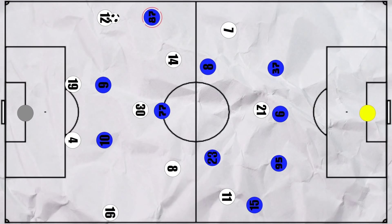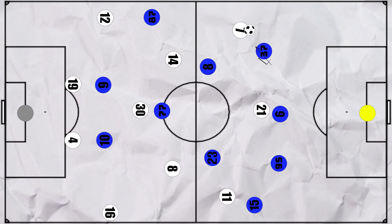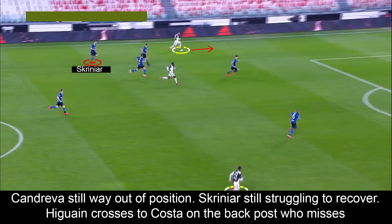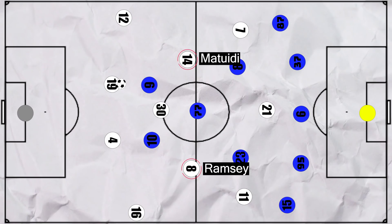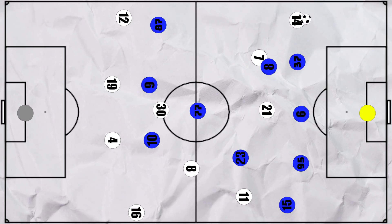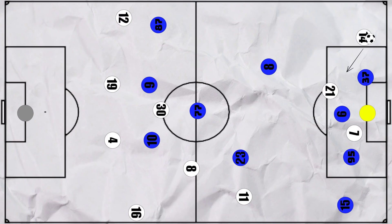Because Juventus' front three started wide, the Inter wing backs were often pinned back and would join the press slightly late, giving the Juventus full backs space to pass. When the Juventus wing backs did press, they left space behind them. Through quick passing in the midfield, Juventus could then release a forward into this space, dragging the wide centre back out of position and looking to attack him. Juventus used this pattern on both sides and created chances in this manner.